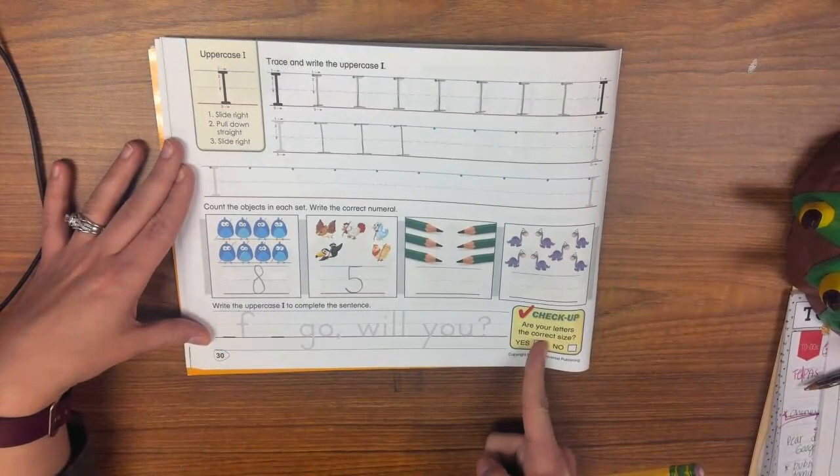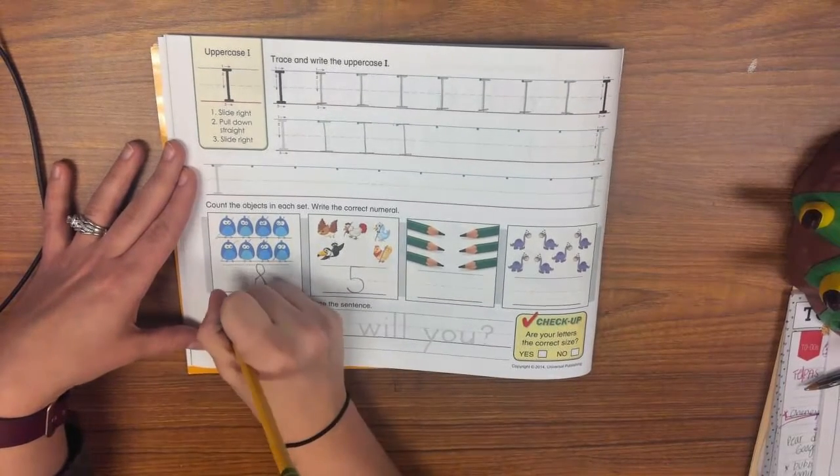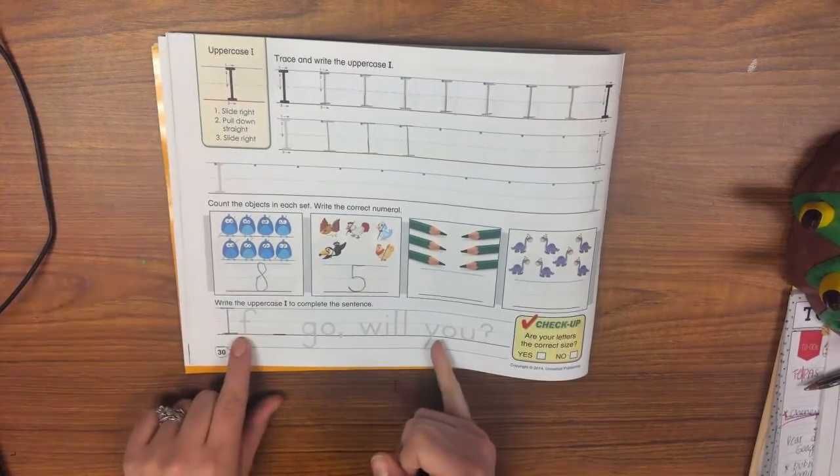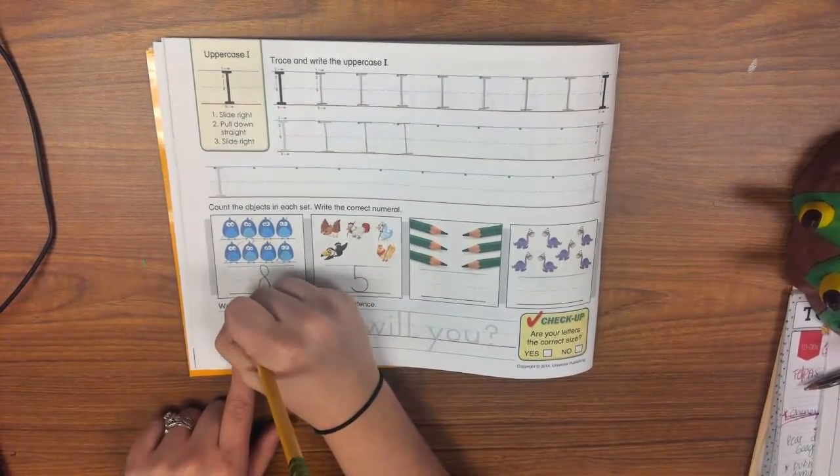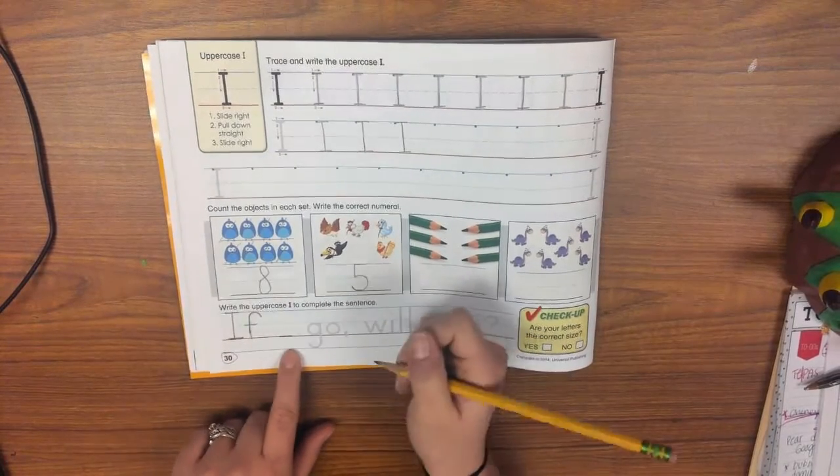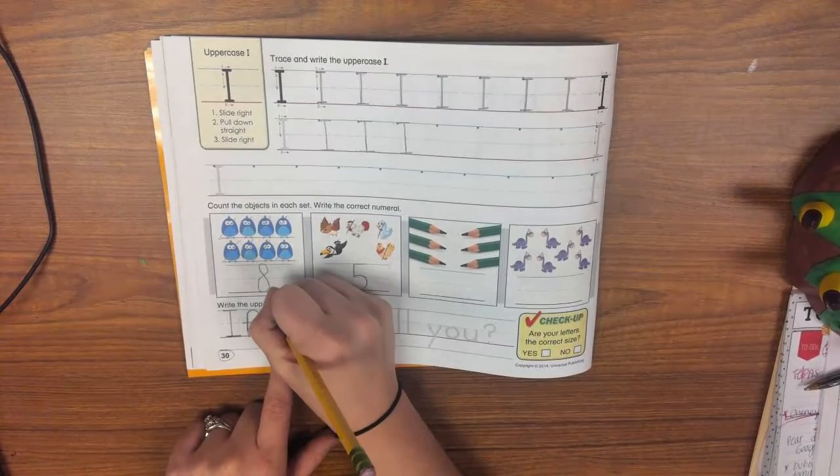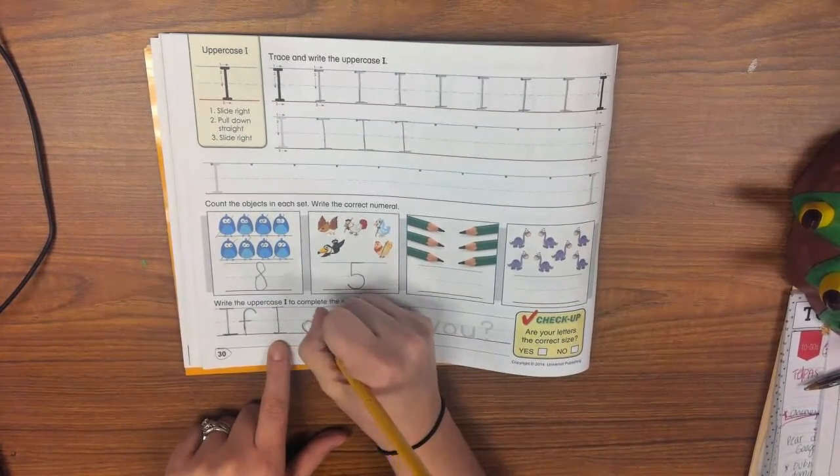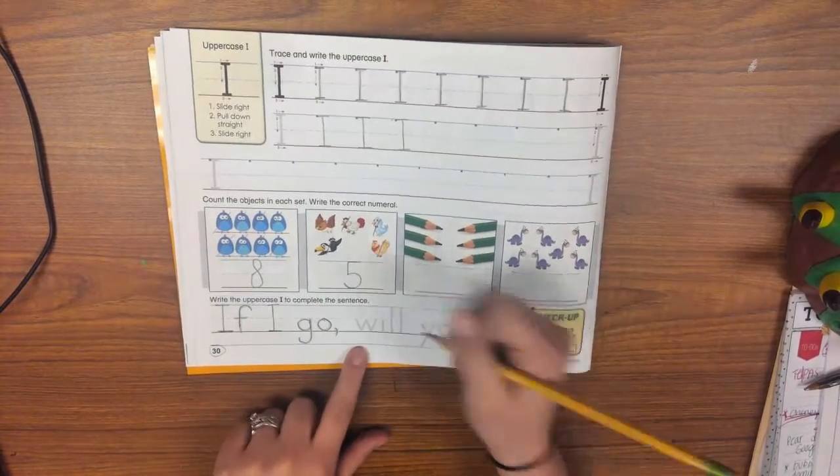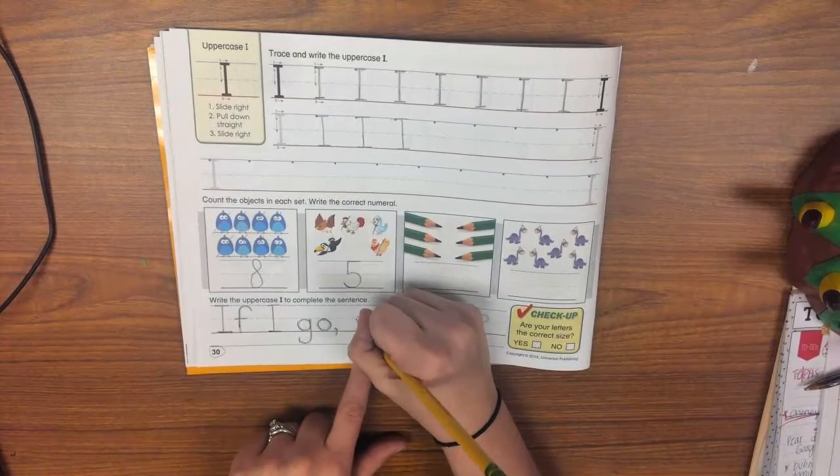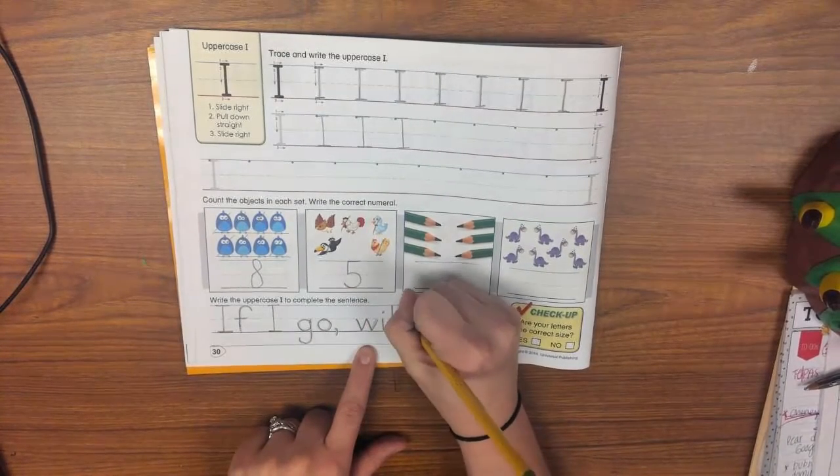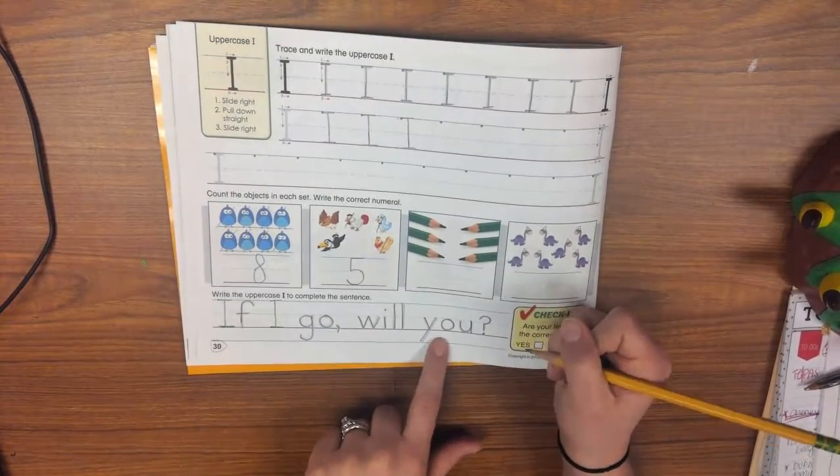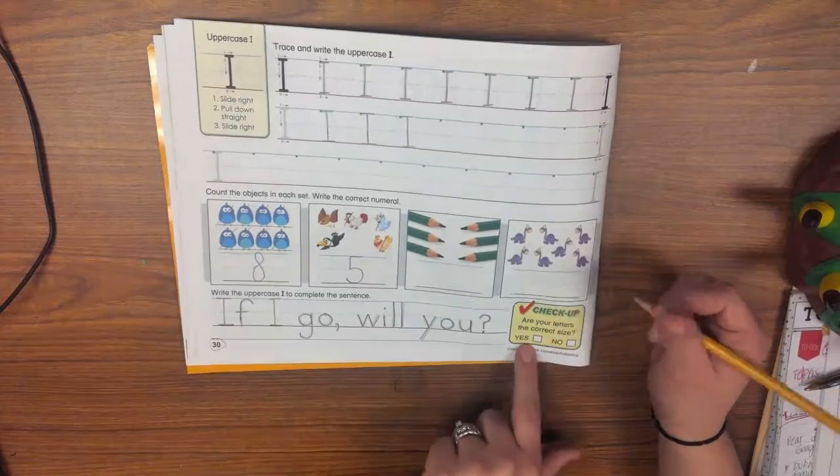Then down here, you're going to write the uppercase I to complete the sentence. So we're going to start with an uppercase I because it's the beginning of our sentence. The first word is I, but that starts our sentence. And then we're going to put another I right here in the blank spot. And so now it says, I go, if I go, will you? If I go, will you?